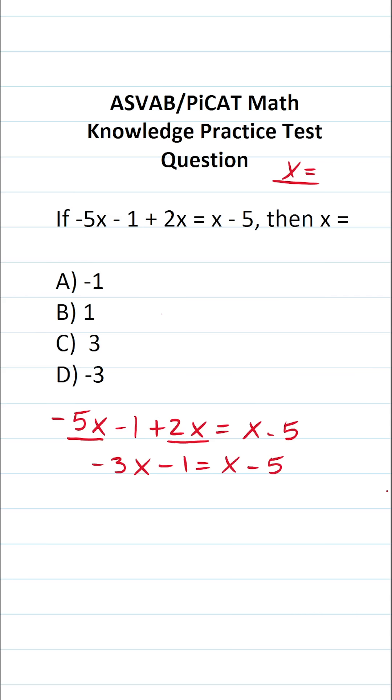All right, so now our goal is to get x on one side of the equal sign and everything else on the other side. So the first thing I'm going to do is add 1 to the other side of the equation via addition. And then I'm going to move x to this side of the equal sign via subtraction.